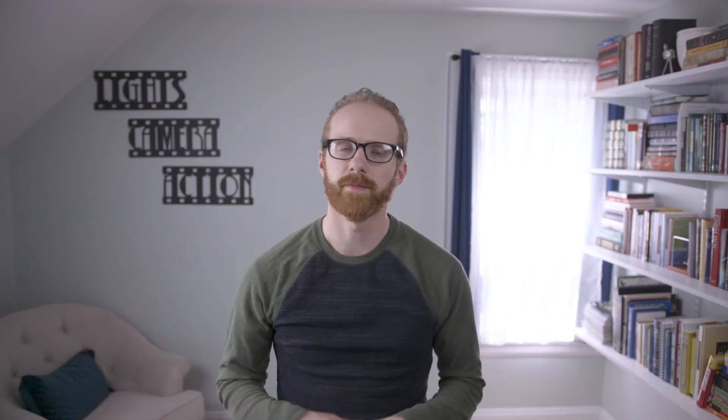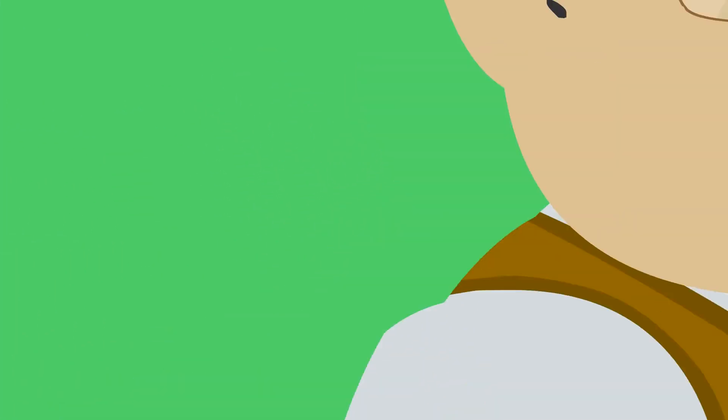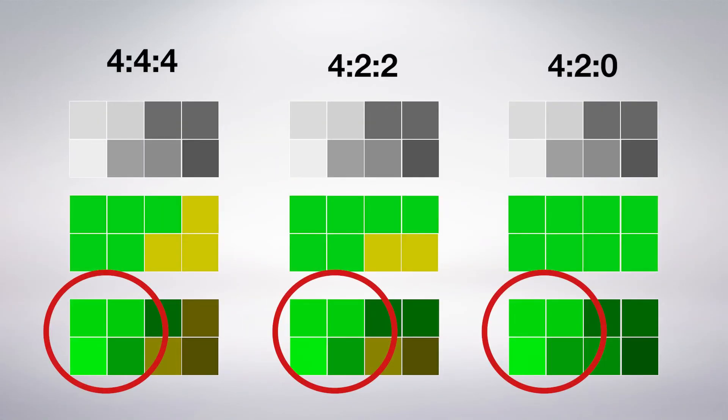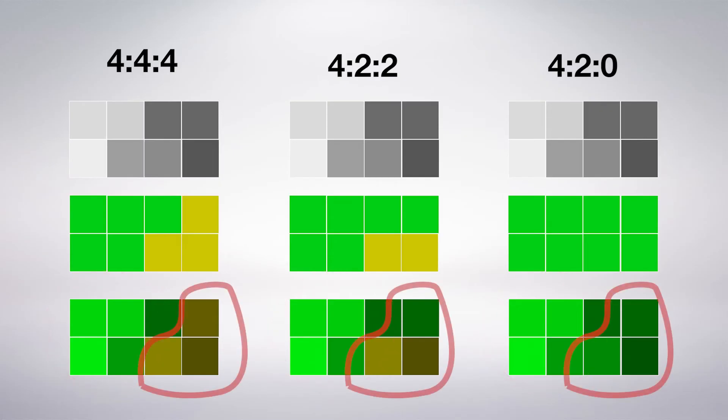So what are the situations in which 4:2:2 or 4:4:4 would actually be very helpful to have? Well, take green screening for instance. Let's zoom away in to a pixel level of a green screen shot. Here you have the screen, and here you might have the top of the shoulder of your actor. When keying out the green,